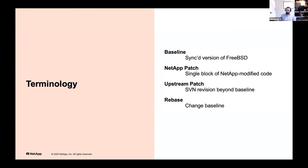Just to clarify some terms: when I say 'baseline,' I'm talking about the version of FreeBSD that we are currently synced to in ONTAP. A NetApp patch is a block of code — you can think of it as an ifdef patch to the source file. An upstream patch, conversely, is actually an entire SVN revision that's cherry-picked on top of our baseline. And rebasing is just changing our baseline from one version to another.